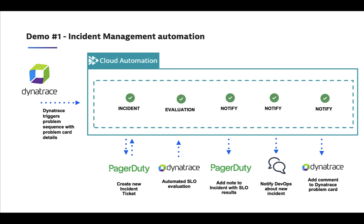Starting on the left-hand side, I'm going to trigger a problem within Dynatrace to simulate a problem that it picks up. A cloud automation sequence will then begin a series of activities, starting with opening up a ticket with PagerDuty, gathering information around the state of the system — saving engineers the time of looking up dashboards. We'll add this information to our PagerDuty comments, and add ticket information to both Dynatrace as well as our Slack channels.